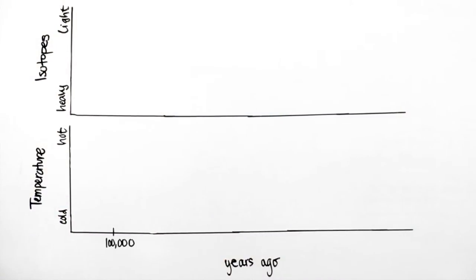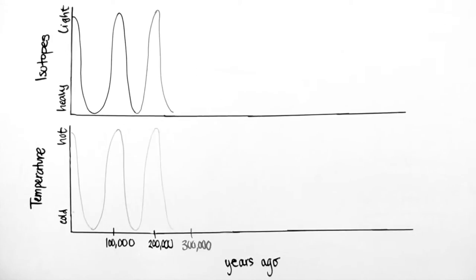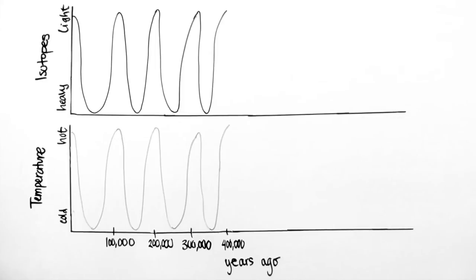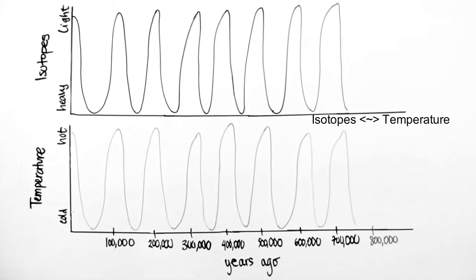To determine the temperature, scientists look at the composition of the ice, which changes with the temperature when the snow formed. Scientists measure isotopes, which are forms of the same element with different masses. The abundance of isotopes in ice depends on temperature.